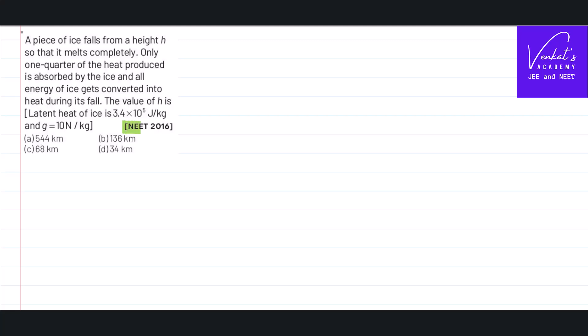This is a 2016 question in thermal properties of matter. The question is: a piece of ice falls from a height h so that it melts completely. There is ice falling from a certain height with reference to the base point, and it is falling freely.